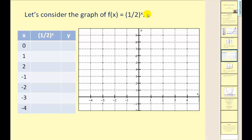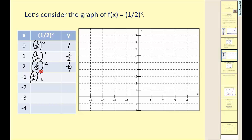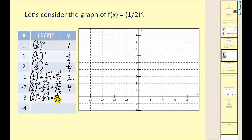Now let's look at exponential decay with f of x equals one-half raised to the power of x. Anything to the power of zero equals one. One-half to the first equals one-half. One-half squared equals one-fourth. One-half to the power of negative one equals two, because that's one to the negative one over two to the negative one, which equals two to the positive one. One-half to the negative two equals four — that's two squared over one squared. And one to any power is always one, so one-half to the negative three gives us eight.